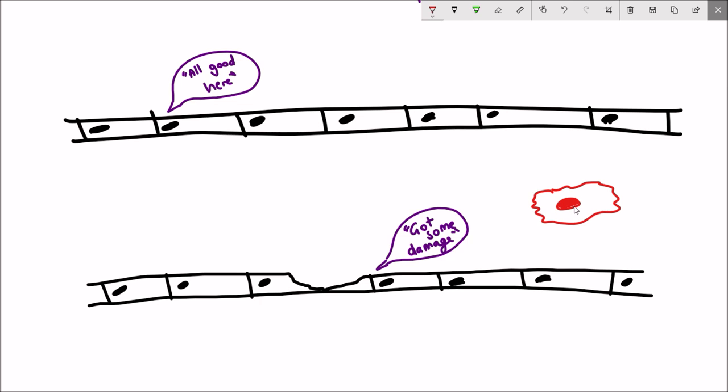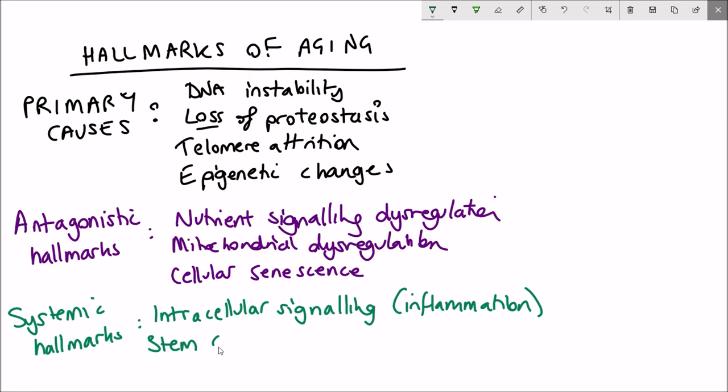And lastly, in ageing there is an associated loss of stem cells. Stem cells are cells that keep on replicating and are there for regeneration and repair of tissues. Therefore, if they get lost over time, you are less able to repair damage in the body which can lead to functional decline.